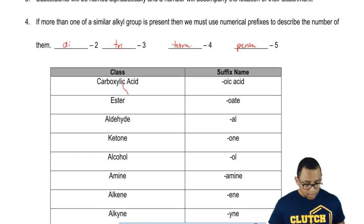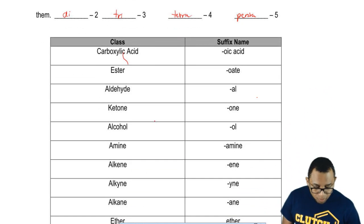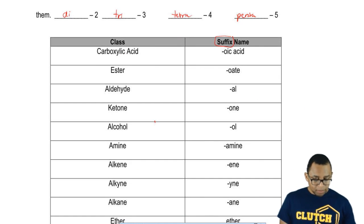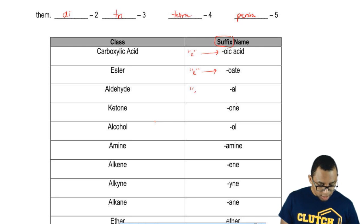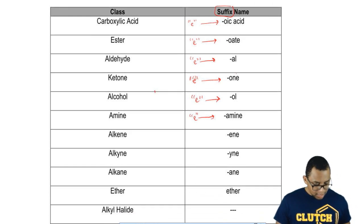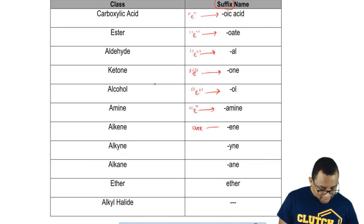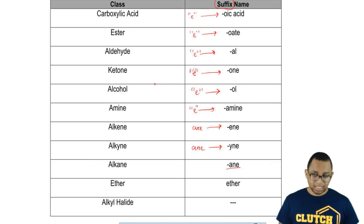When it comes to functional groups, if they're present, they change the ending, the suffix, to these new names here. Basically, we would change the E ending of the alkane name to oic acid, change the E ending to oate, change the E ending of the alkane to al. In all these, we're modifying the E ending to one of these new endings. We'll see how that works. Then we would modify ane to ene, like we saw earlier. We'd modify ane to yne, and then ane is just ane.